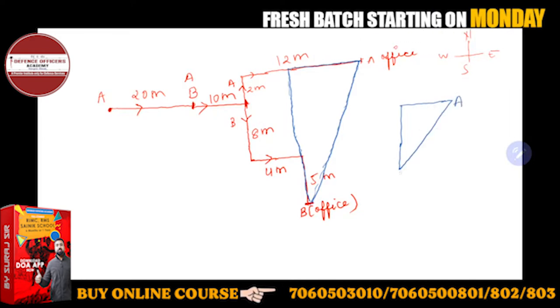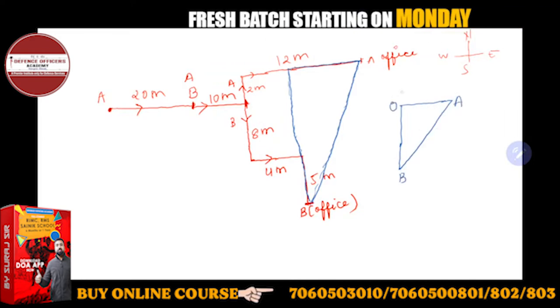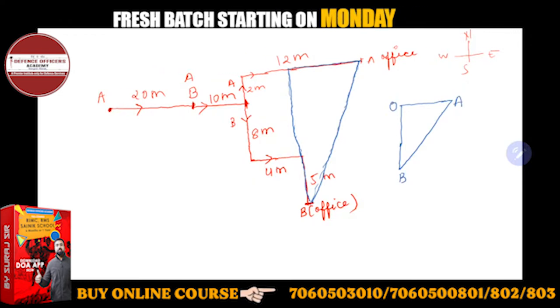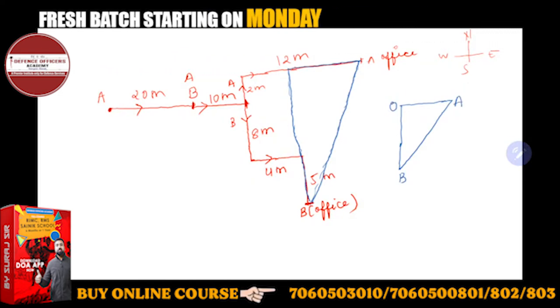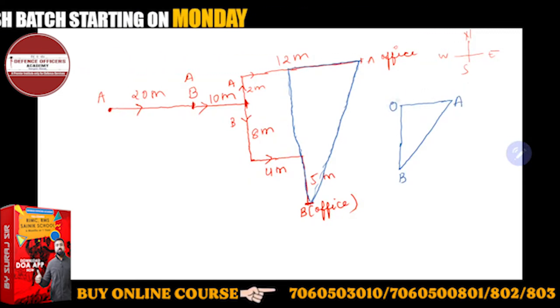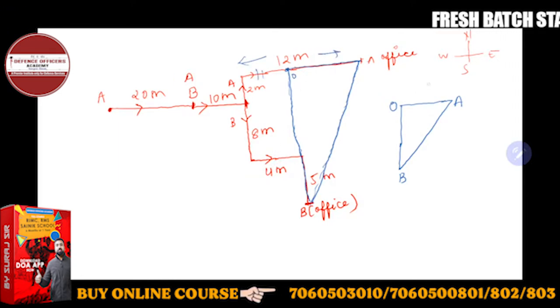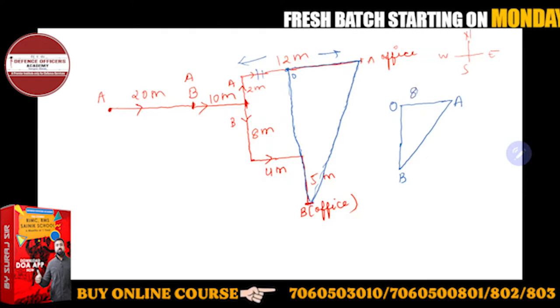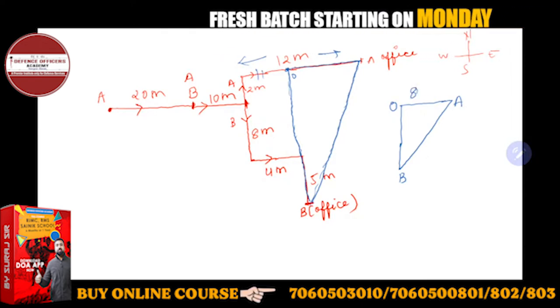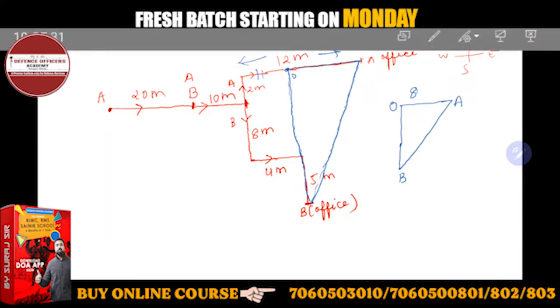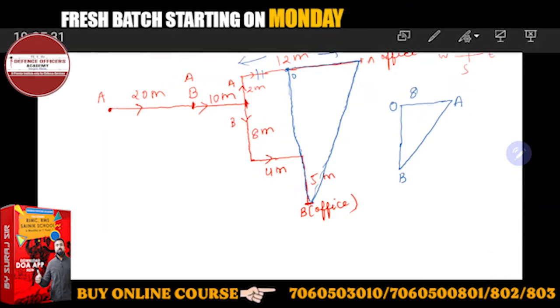Suppose this is A and this is B. Suppose this is point O. You have to take A-B distance. If I talk about OA, this point is O suppose. OA how much will it go? This whole is 12 meters and the beginning portion will be equivalent to 4. So 12 minus 4 will give you 8. So OA is 8.